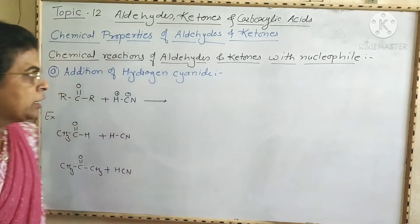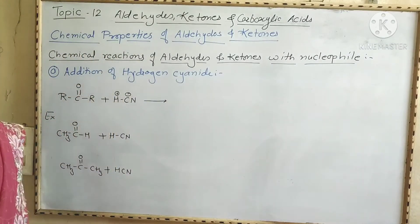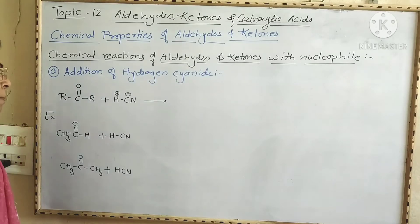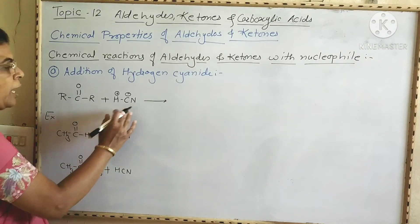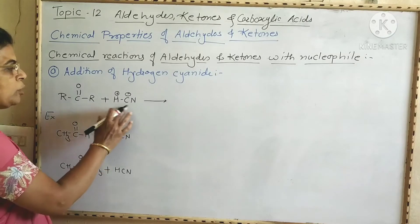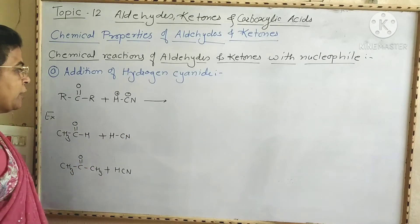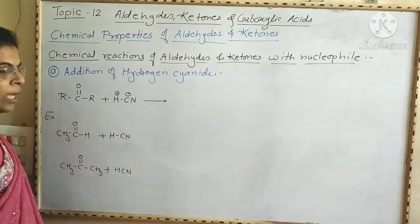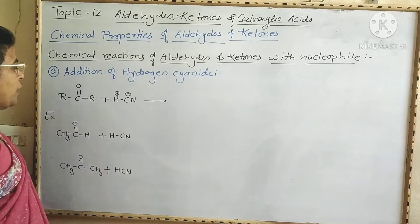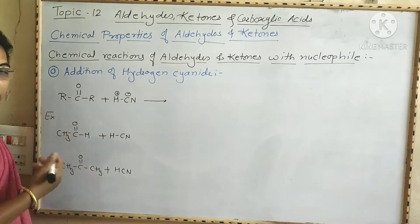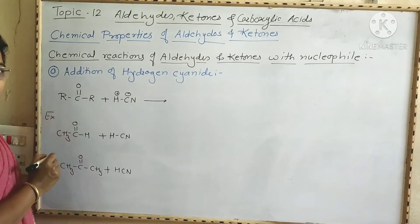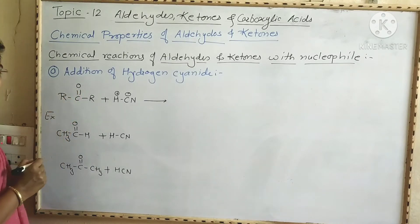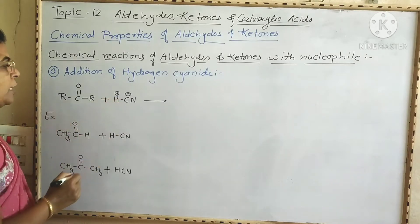The first reaction we are going to see is the addition of hydrogen cyanide (HCN). When an aldehyde, ketone, or any carbonyl compound is treated with hydrogen cyanide, the H is positively charged and CN is negatively charged. In the carbonyl group, the oxygen atom is more electronegative and therefore withdraws electrons toward itself by the inductive effect. Therefore, the carbonyl carbon is slightly positively charged and the oxygen atom of the carbonyl group is slightly negatively charged. So addition of HCN takes place across this carbonyl group.